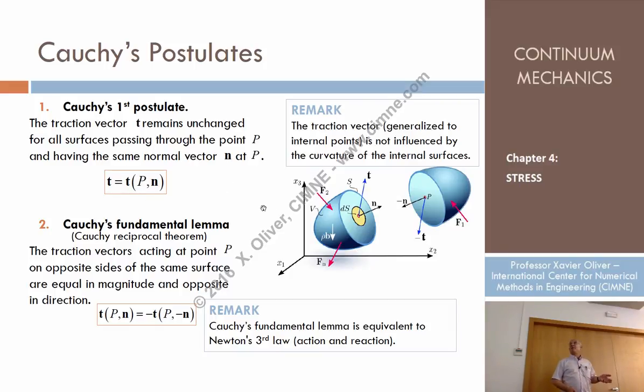So we can talk now about traction vectors at the interior of points, of volumes, of bodies. How? Well, by considering that there is a surface that can pass through that point and this surface splits the body into two parts. But my point is, how many surfaces pass through that point? How many do you think? Infinite. Infinite.